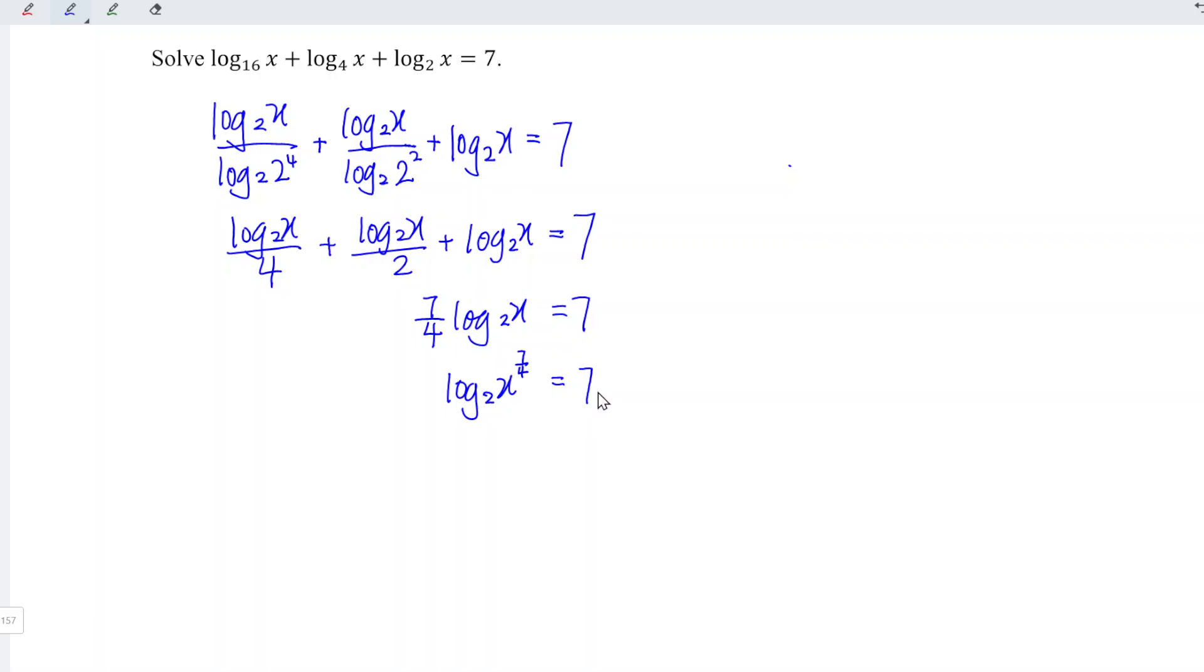Now change this logarithmic form to index form. So which means that we should have x to the power of 7/4 is equal to 2 to the power of 7.